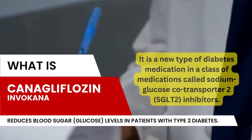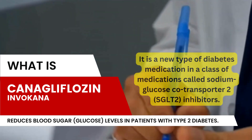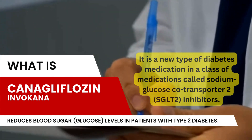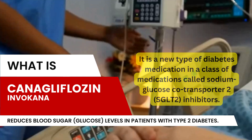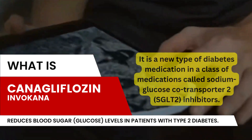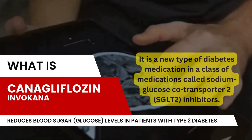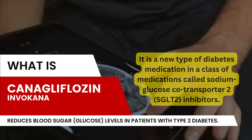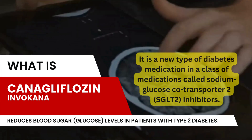Canagliflozin is an oral drug that reduces blood sugar levels in patients with type 2 diabetes. It is a new type of diabetes medication in a class of medications called sodium glucose cotransporter 2 inhibitors.